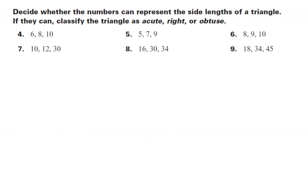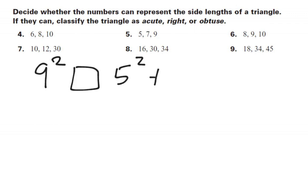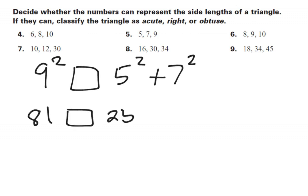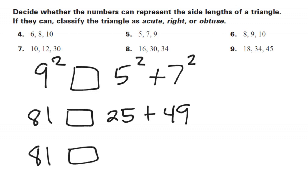Let's try problem five. Nine is the biggest value, so I'm going to use that for my C. Five can be A and seven can be B. Simplifying: 9 squared gives 81, box, 5 squared plus 7 squared gives 25 plus 49, and 25 plus 49 is only 74. So we get a greater than symbol here, which means that this is an obtuse triangle.